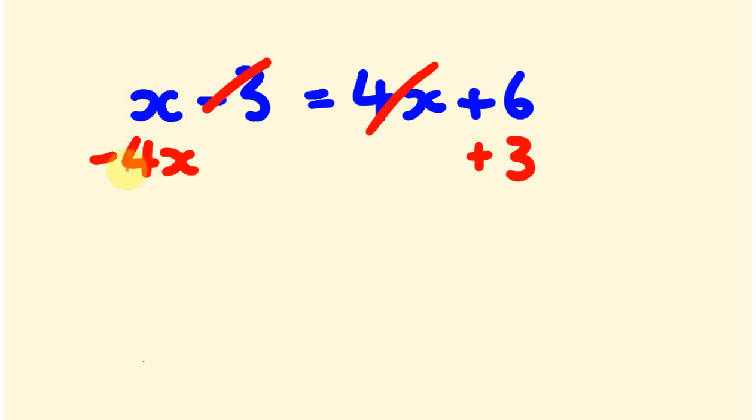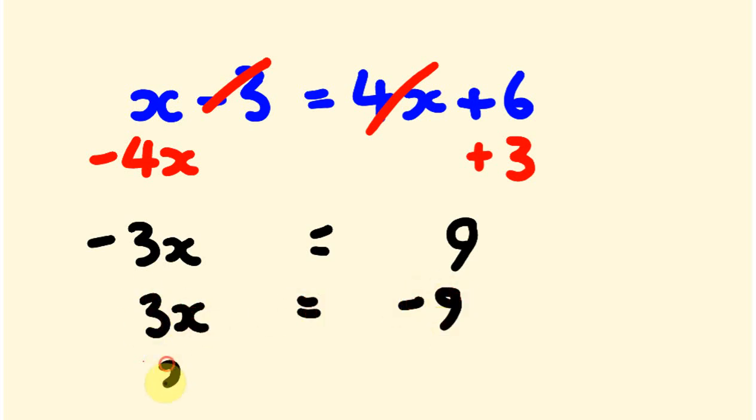All right, so x take away 4x is going to be minus 3x. And this equals 3 plus 6, which is 9. So pretty much we multiply both sides by minus 1. We're going to end up with 3x equals minus 9 and therefore x equals, we divide both sides by 3, minus 3.